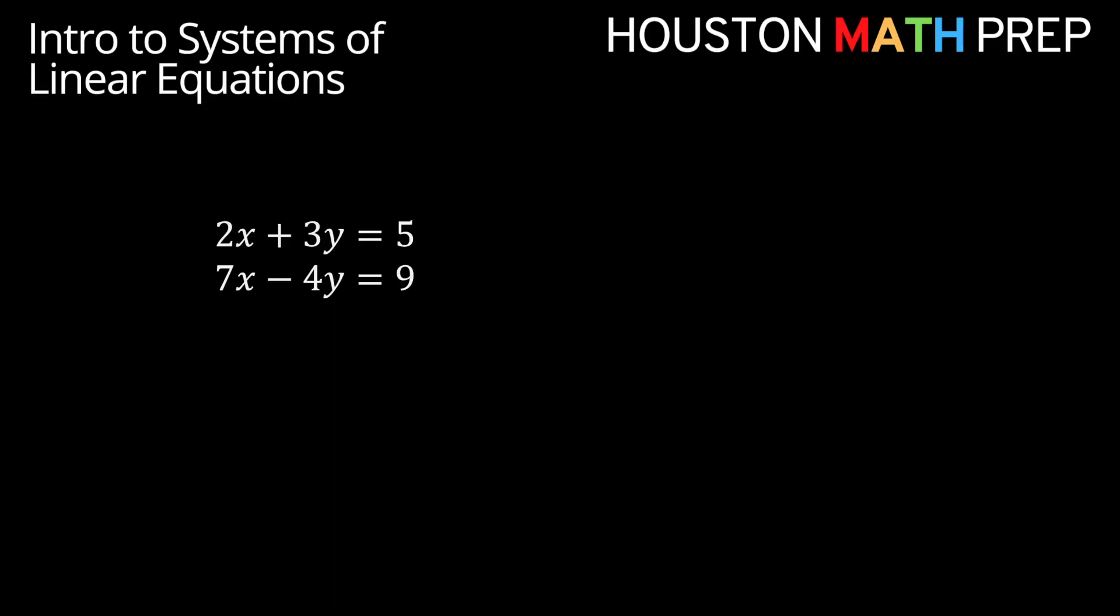If you're looking for just a plain algebra video on systems of linear equations, you can check out our other video in the link below this one. You may already be familiar that a linear equation is an equation that contains no operations on the variable except addition or subtraction of constant multiples of those variables. Something like our 2x plus 3y equals 5 or our 7x minus 4y equals 9 here.